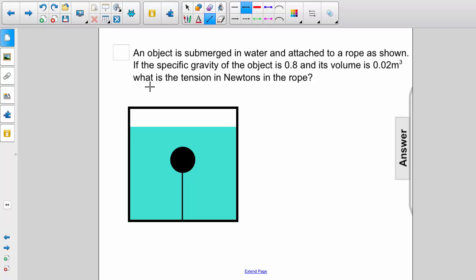An object is submerged in water and attached to a rope as shown. If the specific gravity of the object is 0.8 and its volume is 0.02 meters cubed, what is the tension in newtons in the rope?